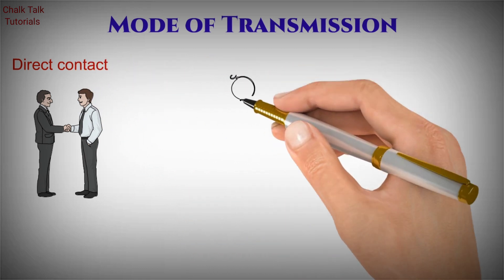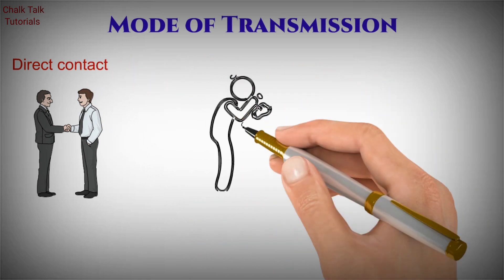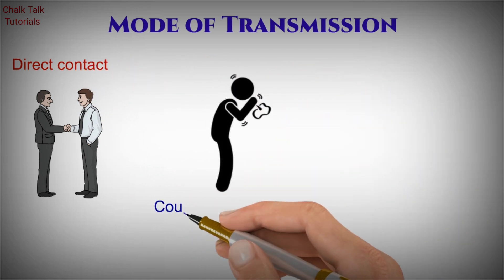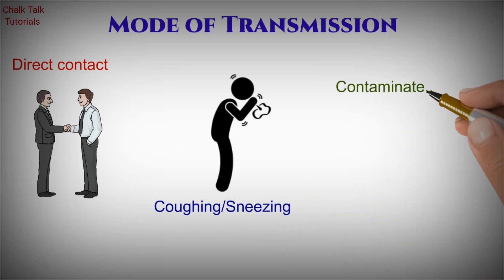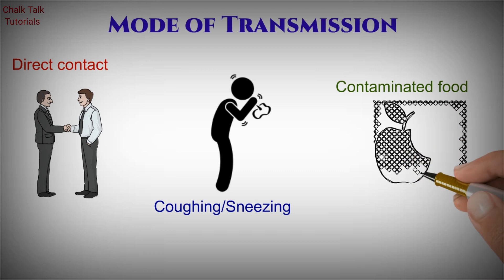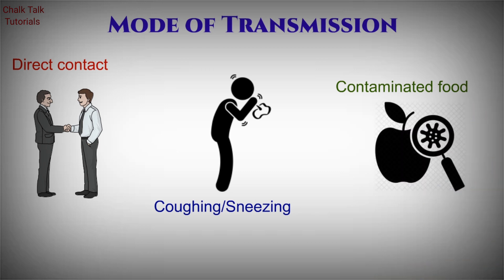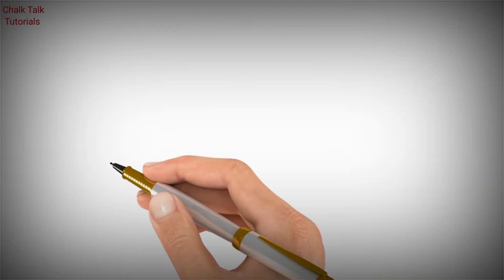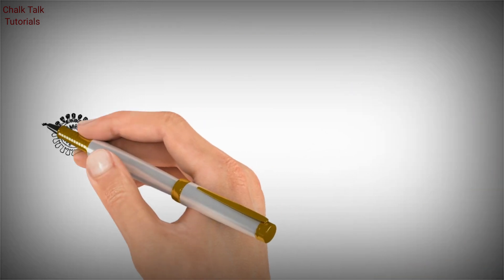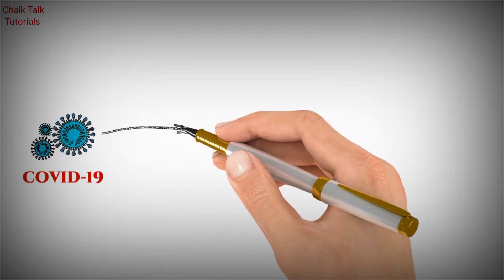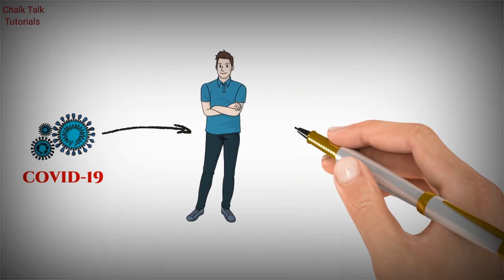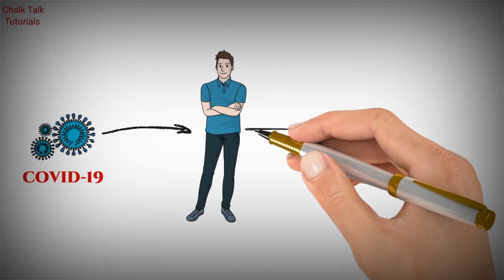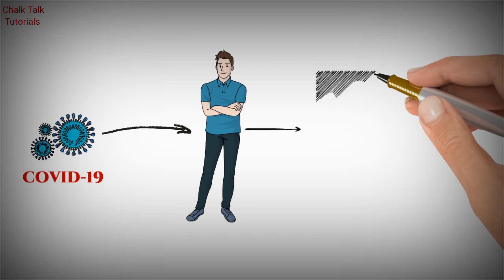In transmission, coronavirus resembles the transmission of influenza virus which causes the common cold. It can transmit through direct contact, coughing, sneezing, or by eating contaminated food products. Once COVID-19 enters a healthy human body, it infects that person and symptoms of the disease appear very quickly, showing that this virus has a very short incubation period.